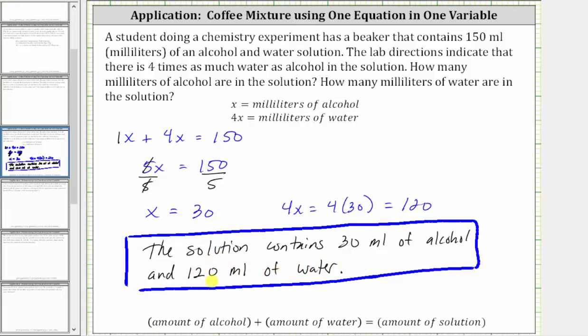And just as a double check, notice 120 plus 30 does give us 150 milliliters, and our solution does contain four times as much water as alcohol, because 30 times four is equal to 120. I hope you found this helpful.